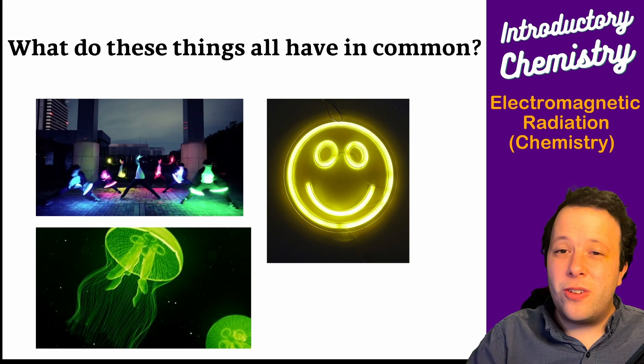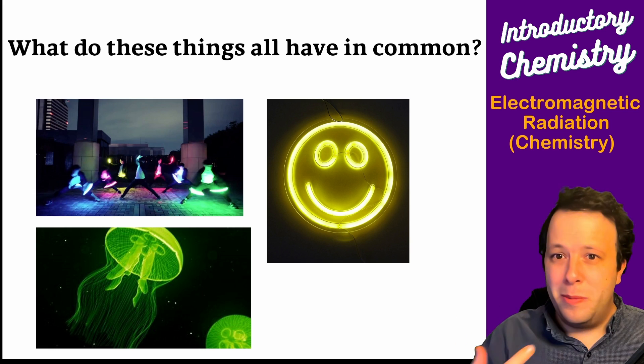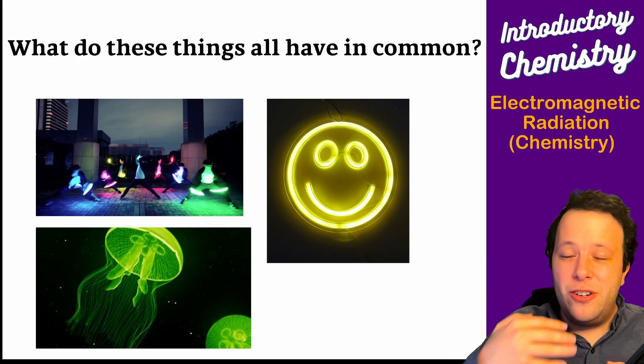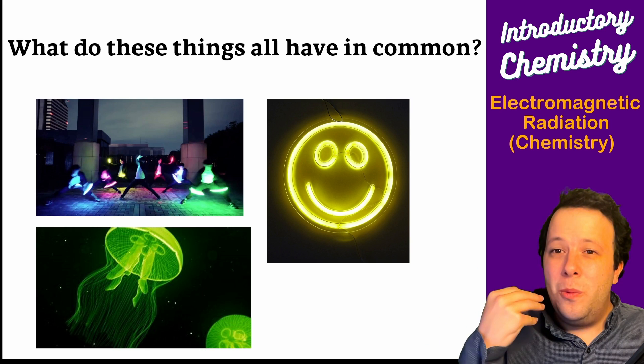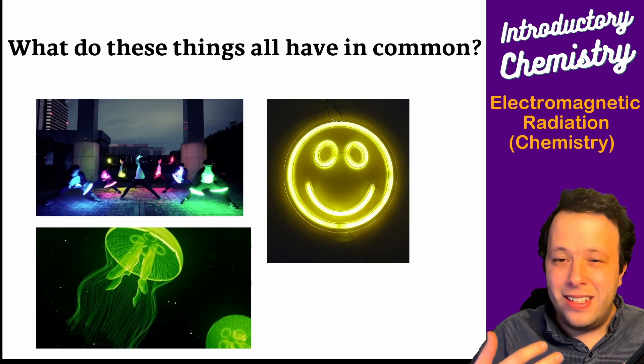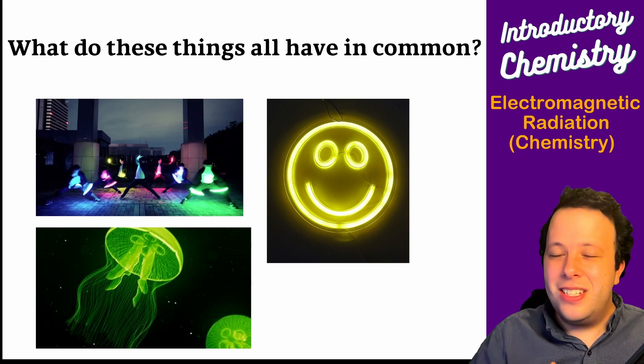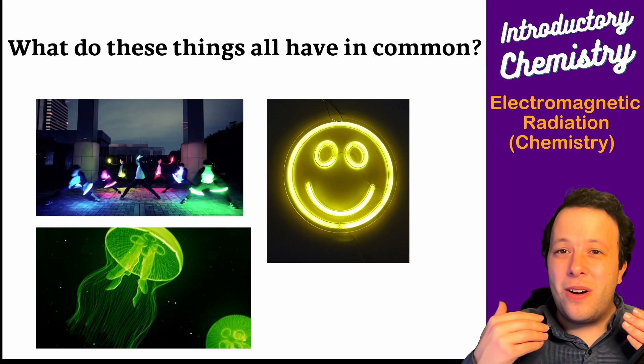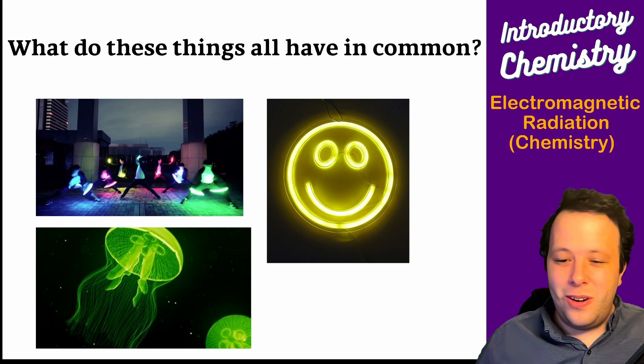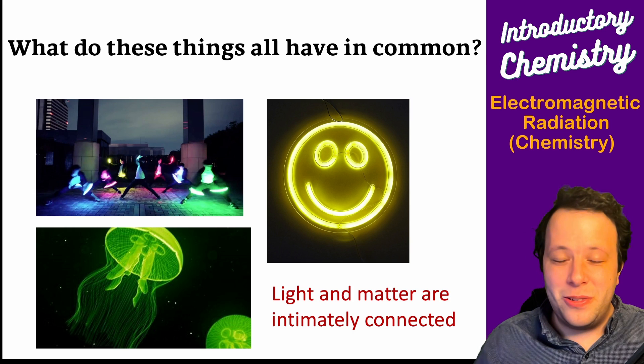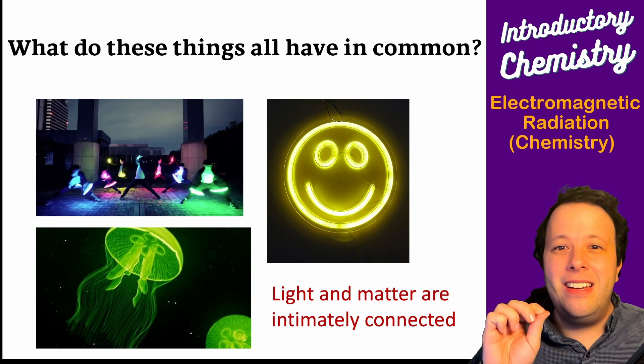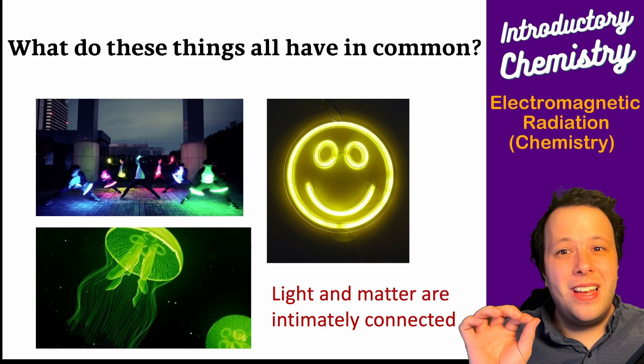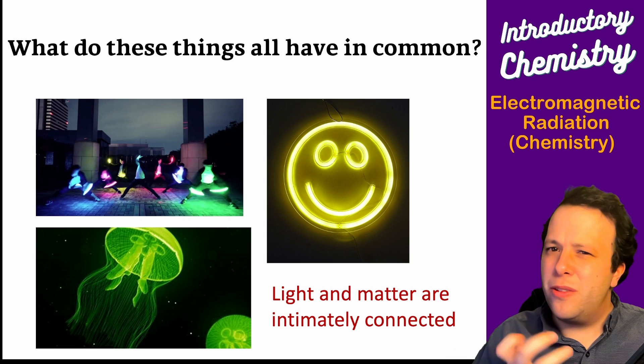So when an electron gets excited, meaning it absorbed a bunch of energy, it's kind of vibrating around and then it goes up to a higher energy level. Now when it comes back down it can emit light in order to relax. So it's how it de-stresses itself. So all these are how electrons can de-stress and we can see all kinds of cool effects as a result. Meaning that light and matter are intimately connected. All these are made of matter and they all emit light. So they're related.